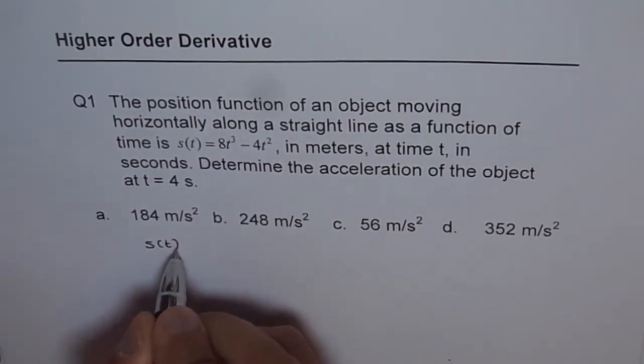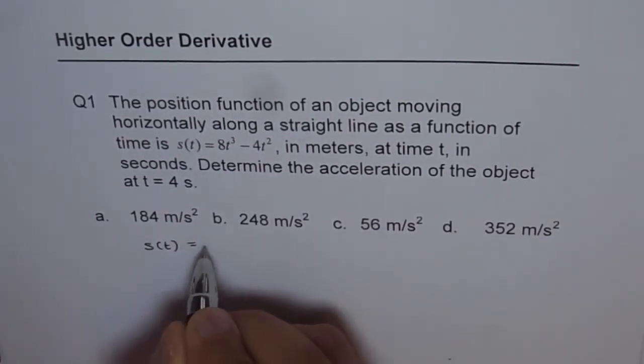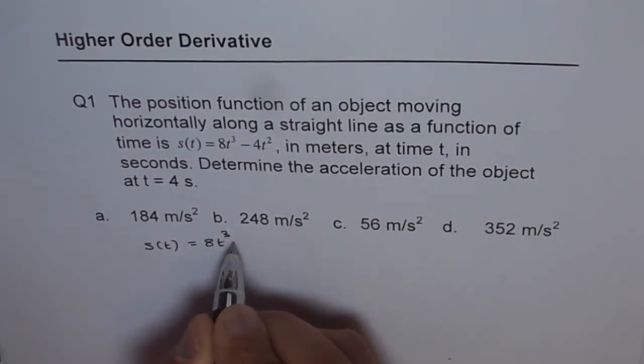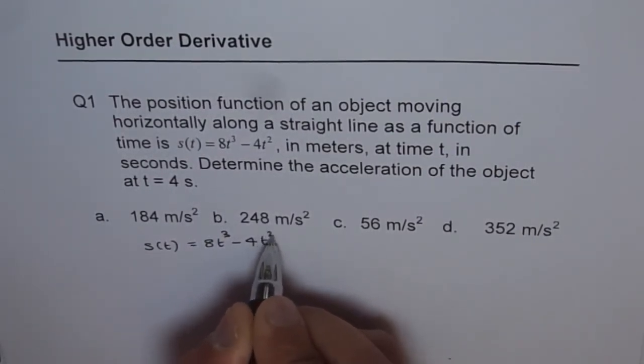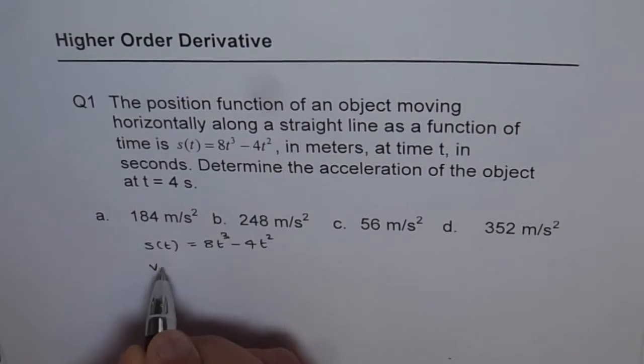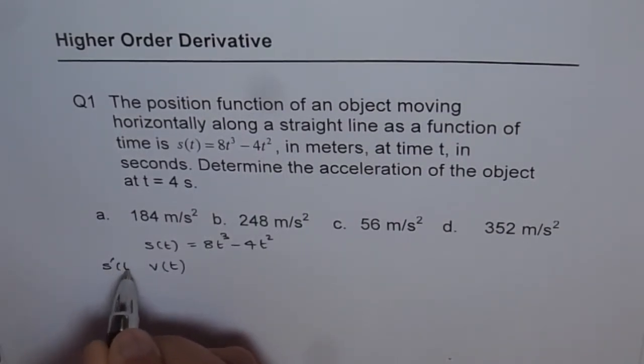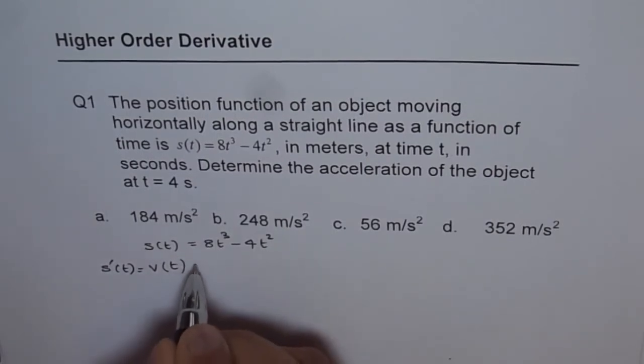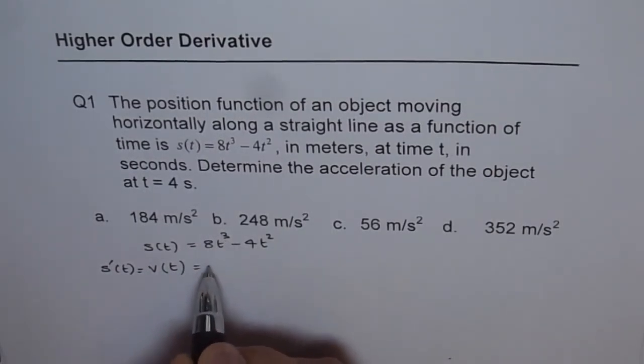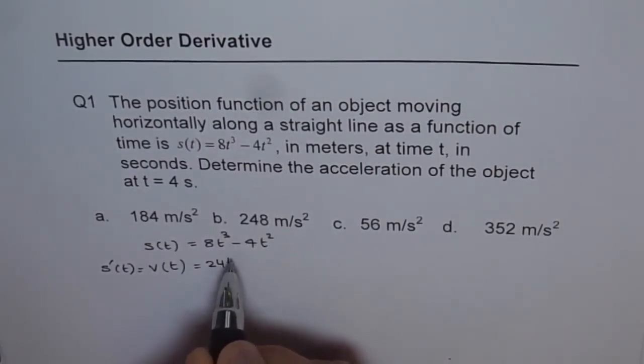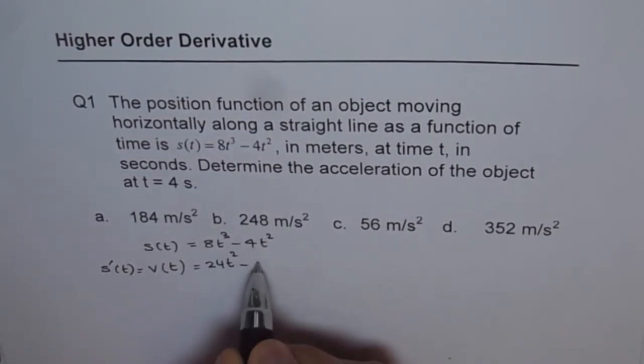So we are given the function which is s(t) equals 8t³ minus 4t². Now the first derivative will be the velocity. We can write s'(t) which is velocity and that is equals to 8 times 3 is 24t² minus 8t.